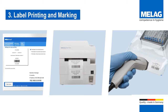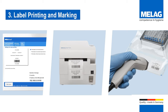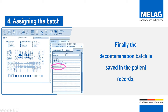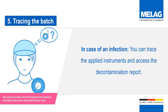In addition to the documentation and approval, you can subsequently print barcode labels using MelaPrint60. The barcode label can be stuck on the wrapped instruments and informs the clinic team about the sterilization batch and the due date. When applying the instruments to the patient, please scan the barcode in order to assign the information to the patient's records. Finally, the decontamination batch is displayed and saved in the patient records. In case of an infection, you can trace the applied instruments and access the decontamination report as complete evidence.